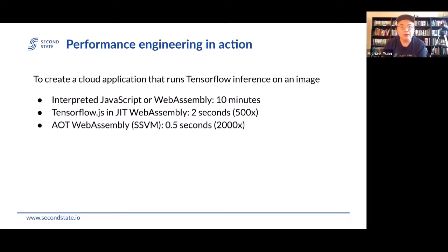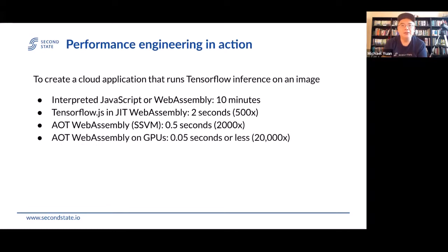However, if we optimize our WebAssembly stack — not even go to native, but do WebAssembly with ahead-of-time optimization — for instance the SSVM (Second State VM), an open source WebAssembly implementation, running the same application gets you to half a second, which is a four-time performance improvement. Half a second is very acceptable to most interactive web applications. But you can optimize it even further by giving it custom hardware like GPU and having the compiler optimize instructions for GPU, getting another 10x performance gain, bringing it to 0.05 seconds or less per image.